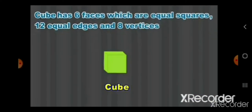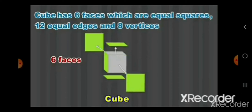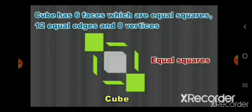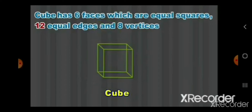First shape is a cube. Cube has 6 faces. How many faces? 6. 1, 2, 3, 4, 5 and 6. Now what do you observe here? They are all equal squares. Equal squares mean all the faces are in square shape and they are equal in size.